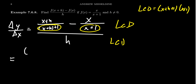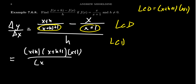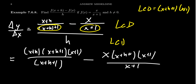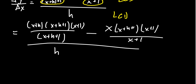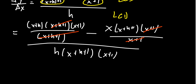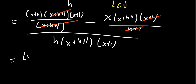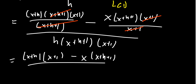We get (x+h) times (x+h+1)(x+1) over (x+h+1), minus x times (x+h+1)(x+1) over (x+1), all sitting above the denominator h(x+h+1)(x+1). Hesitate to multiply out the numerator — always wait until it's beneficial. The denominator should always be left factored. Then (x+h+1) cancels in the first term and (x+1) cancels in the second term.